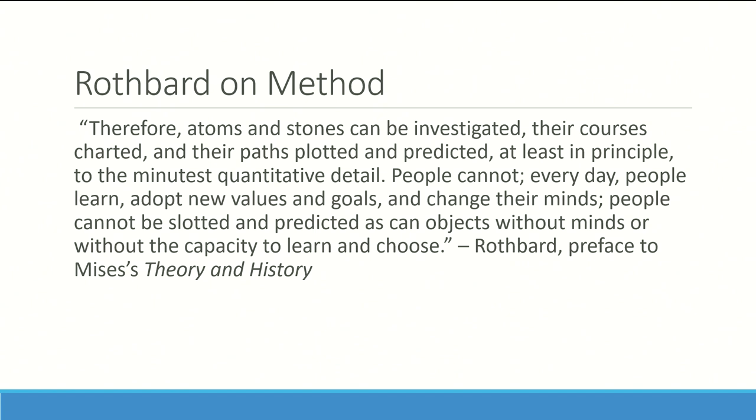People every day adopt new values and goals and change their minds. People cannot be slotted and predicted as can objects without minds or without the capacity to learn and choose. This is in Rothbard's great preface to Mises's book 'Theory and History.' The reason I raise this is that the neoclassical branch of economics has adopted the methods of the natural sciences. They have what's called 'physics envy' — they want to use calculus, precise measurement, laboratory experiments, and settings in the way they do economics. Rothbard and Mises show this is totally incorrect because our subject matter is fundamentally different.